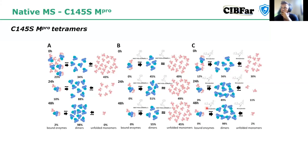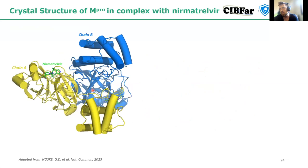Nirmatrovir again had a completely different behavior — it seemed to induce the formation of dimers from both sides. Curious about that difference, we asked: could we use the sample incubated with nirmatrovir to get crystals? Starting from the monomeric sample, we added nirmatrovir and got a crystal structure.